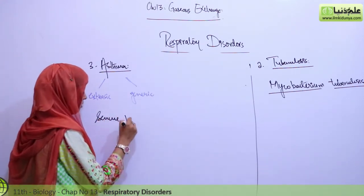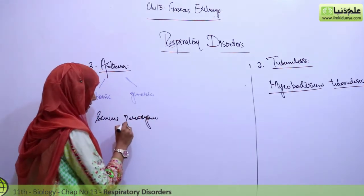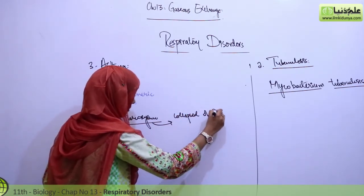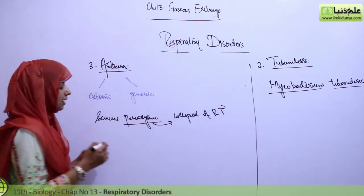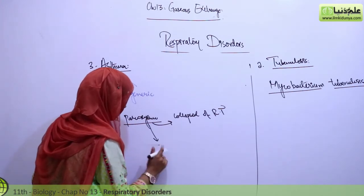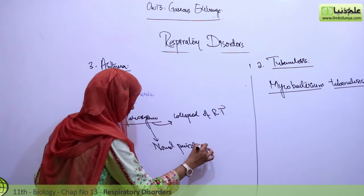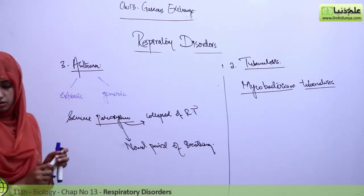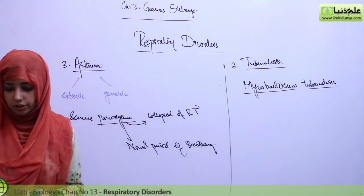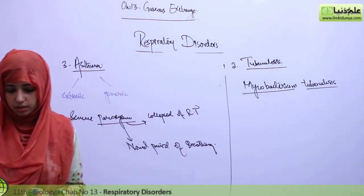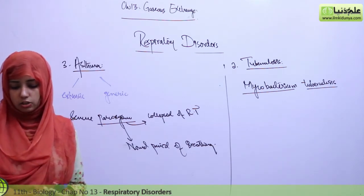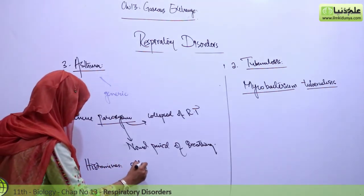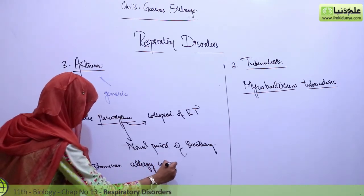The severe paroxysm involves a collapse or constriction of the respiratory tract, after which there is a normal period of breathing. Asthma results from spasmodic contraction of the small bronchial tubes and leads to the release of inflammatory chemicals such as histamine into the circulatory system, which causes severe contraction of the bronchioles. Histamines are allergy-causing substances.